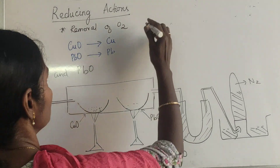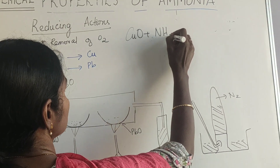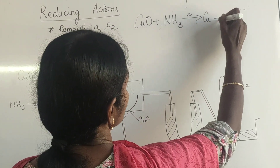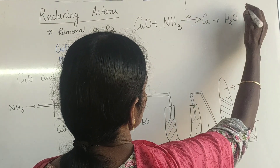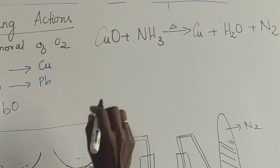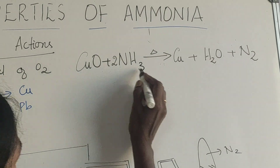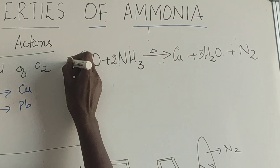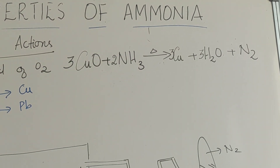Copper oxide reacts with ammonia when heated to give copper, plus water, plus nitrogen. Balancing the equation: 2NH3, giving 3 on the oxygen side, so 3 copper oxide and 3 water.